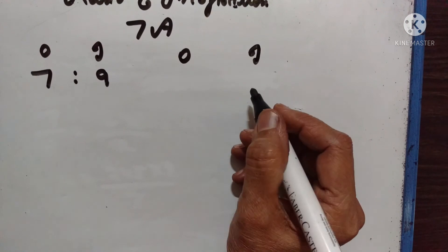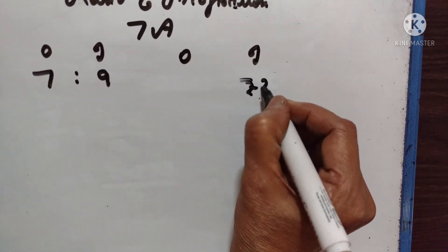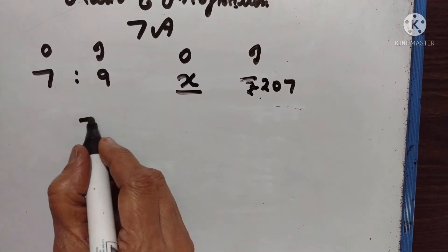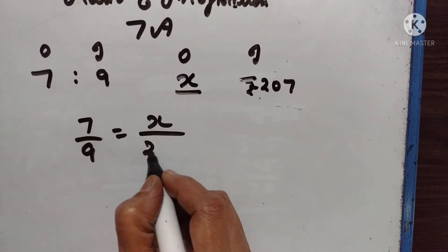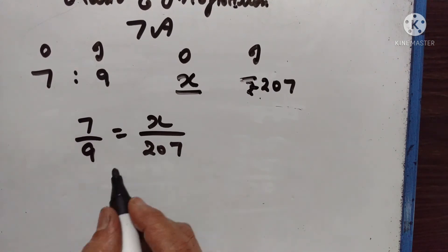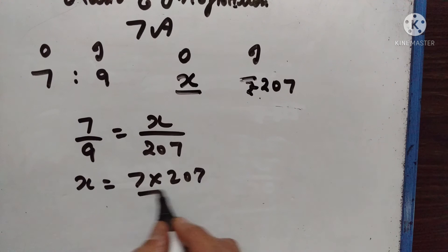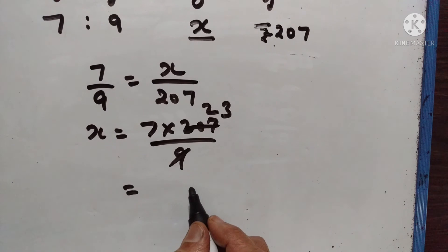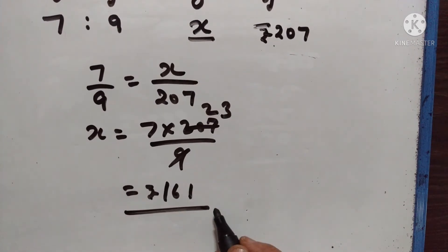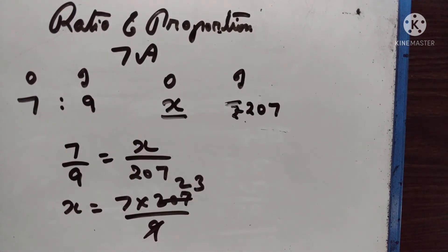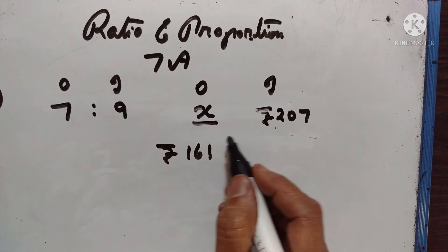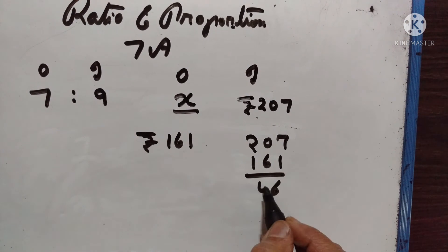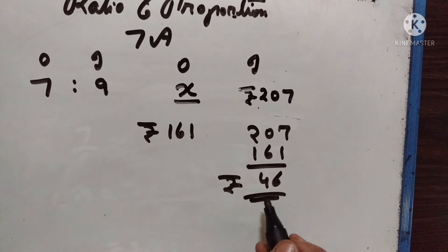Next, if the increased fare is Rs. 207, what is the original price? Let the original price be x. So 7 upon 9 is equal to x upon 207. x is equal to 7 into 207 upon 9, which equals Rs. 161. So the original fare is equal to Rs. 161. The increase in fare is 207 minus 161, which equals Rs. 46.